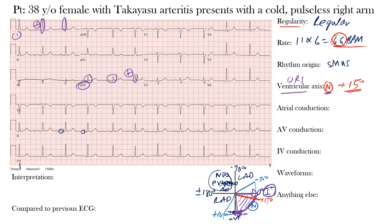For atrial conduction, we look at leads II and V1. We don't reach the P wave amplitude for right or left atrial enlargement, and the total duration of the P waves in leads II and V1 appears within normal limits — less than 120 milliseconds, or three small boxes. So atrial conduction is normal here.